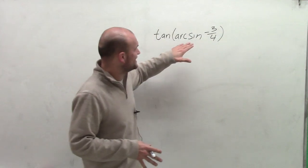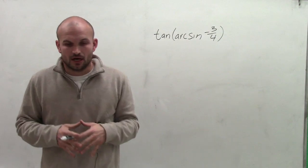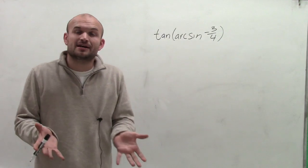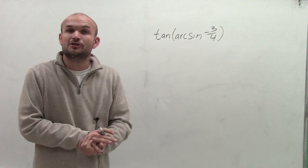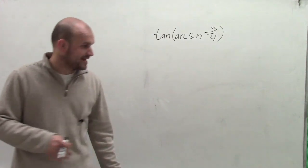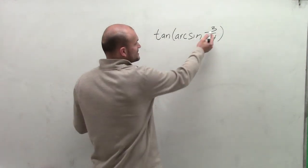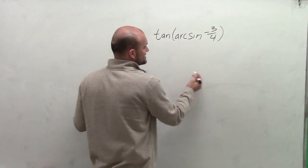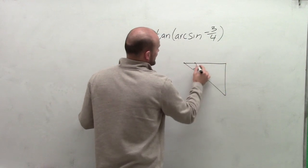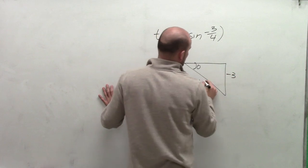Since I'm taking the inverse sine of negative 3 over 4, I notice that it's not going to be a point on the unit circle. So I'm going to have to create some right triangles. There are a couple of right triangles I can produce. Since my opposite side is negative 3, I have two triangles here. I could have theta here, with this side being negative 3 over 4.